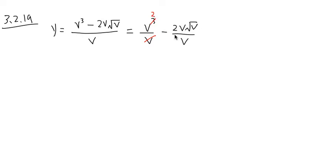And on the second part, 2φ over φ right here, I can cancel all the φ's, and I will just be left with 2 square root of φ.